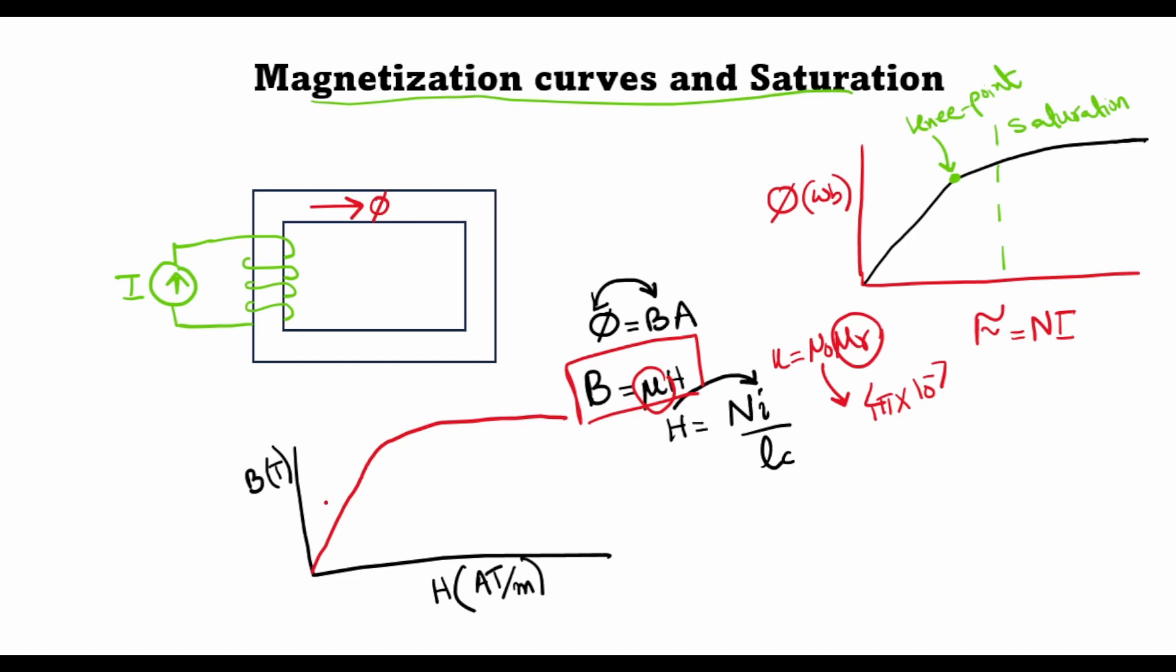So muR is nothing but the slope of this curve. If I were to take two points here—H1 and H2 with corresponding flux densities of B1 and B2—and if I were to calculate the slope here, this slope will be equal to muR1. Here you can see that a small increase in the magnetic field intensity leads to a considerable increase in the magnetic flux density.